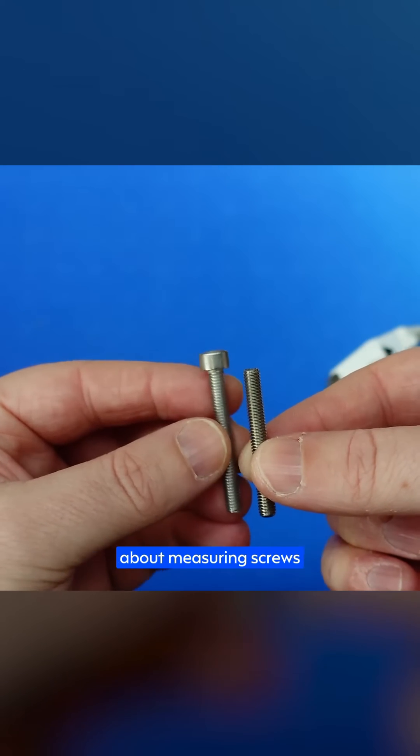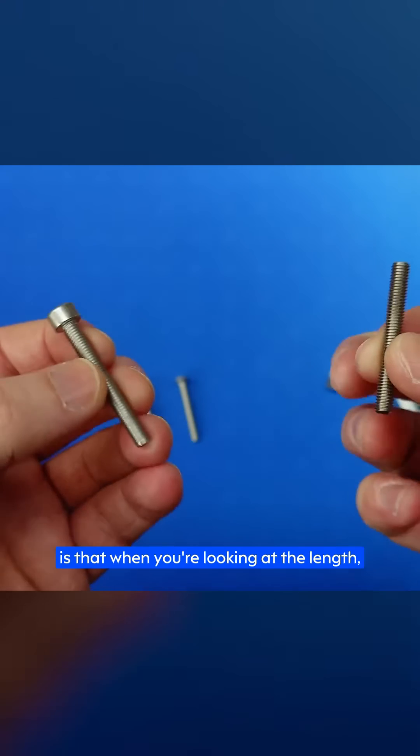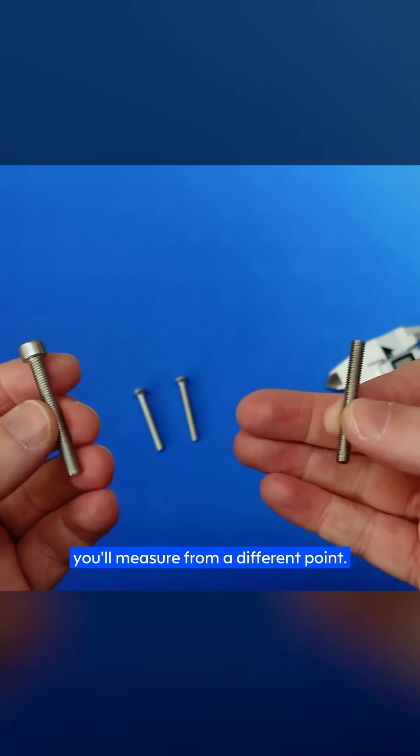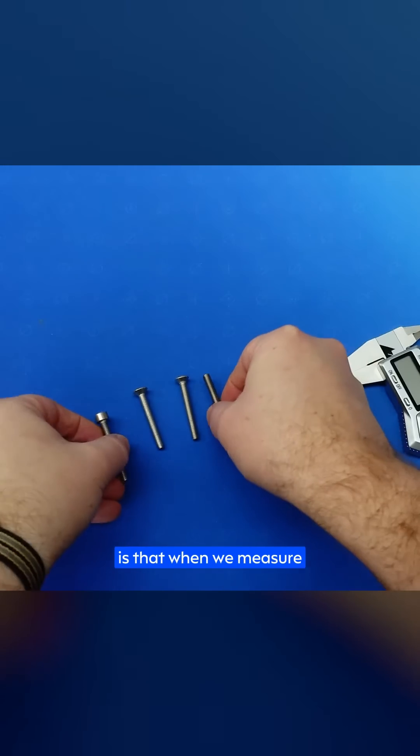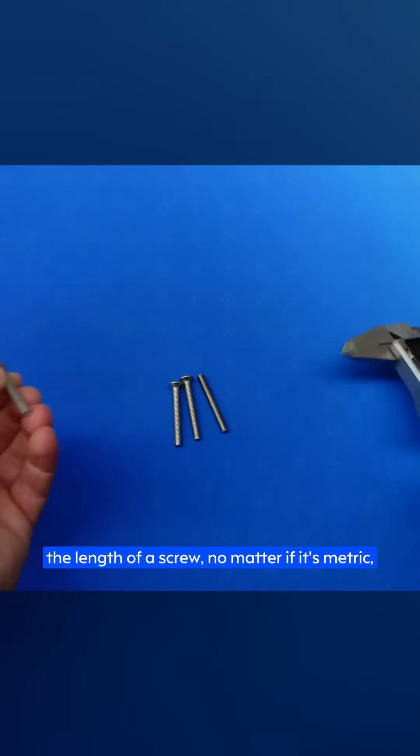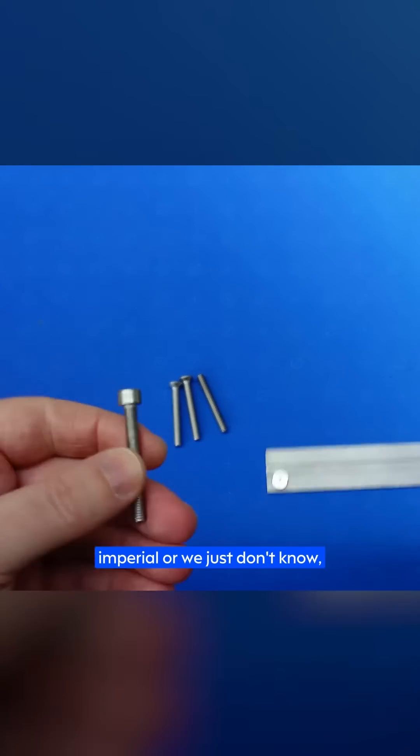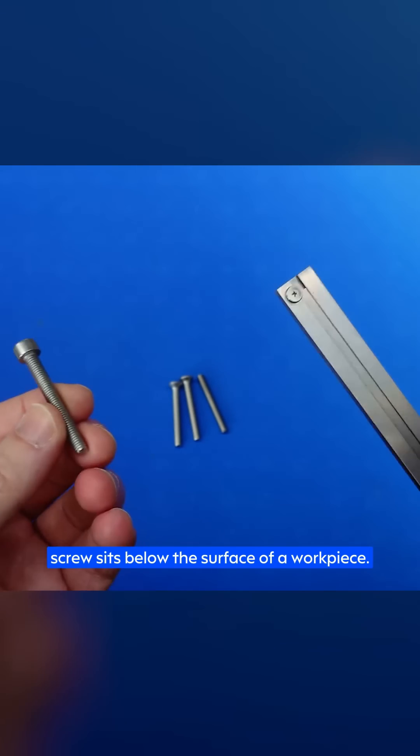But the key thing to understand here about measuring screws is that when you're looking at the length, depending on the head type, you'll measure from a different point. The easiest way to think about this is that when we measure the length of a screw, no matter if it's metric, imperial, or we just don't know, we're actually measuring how much of that screw sits below the surface of the workpiece.